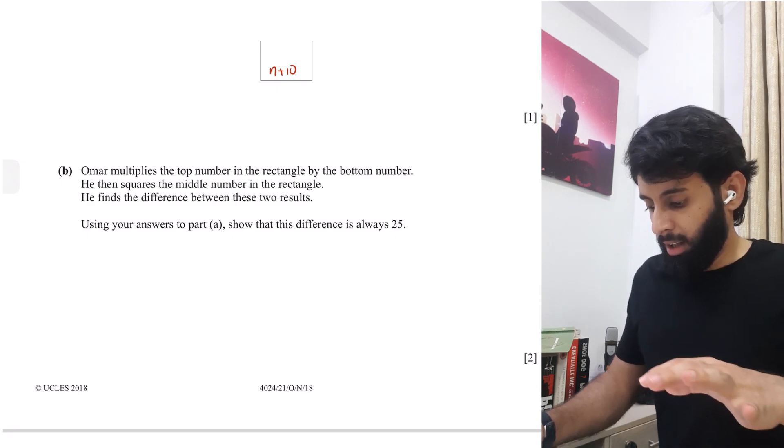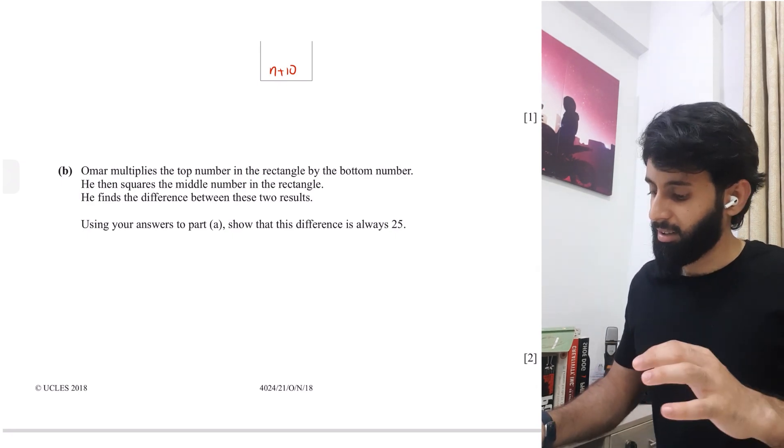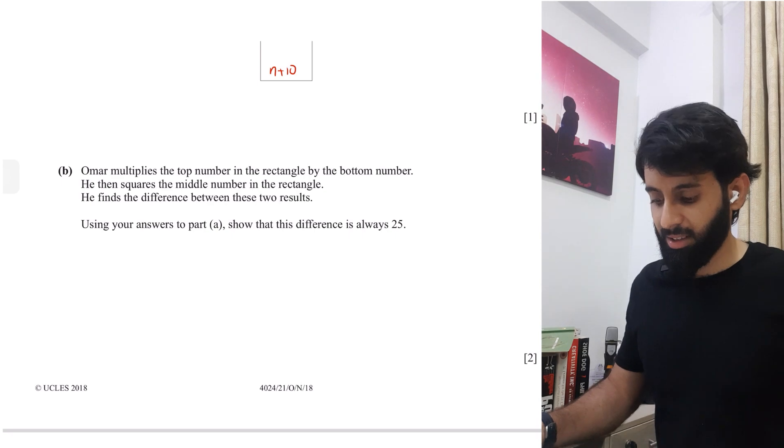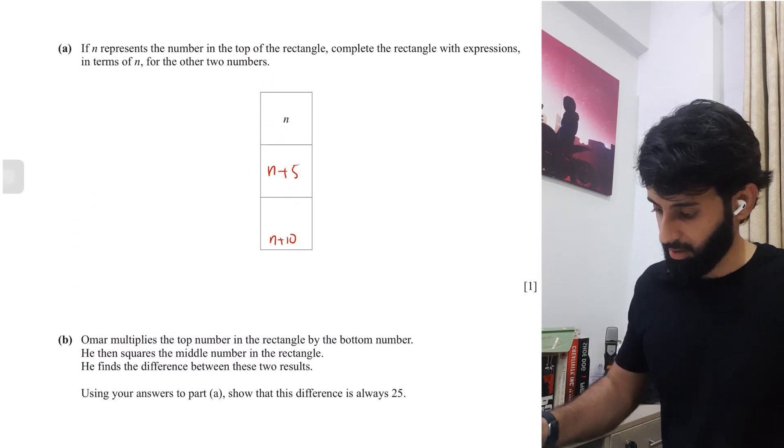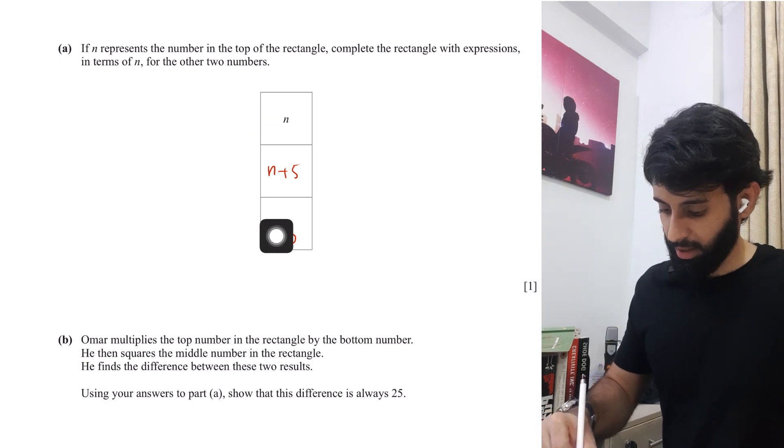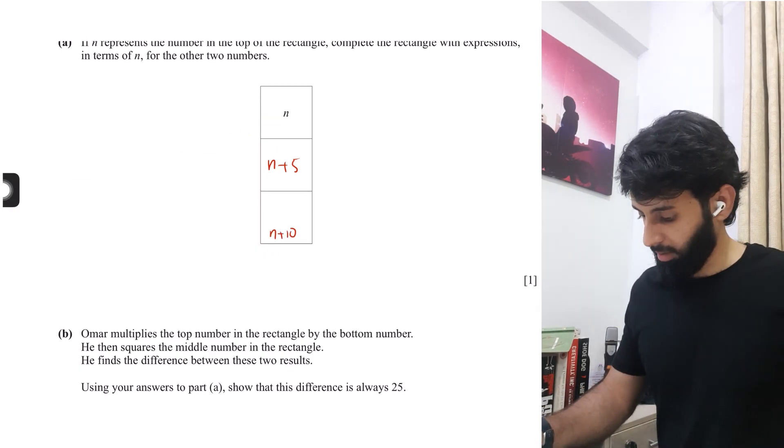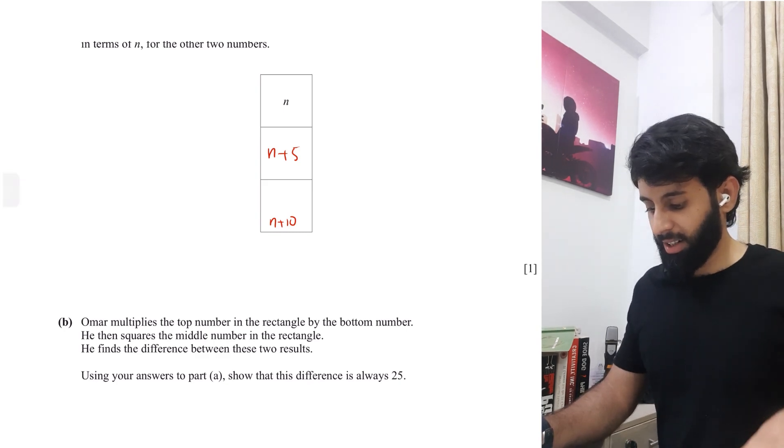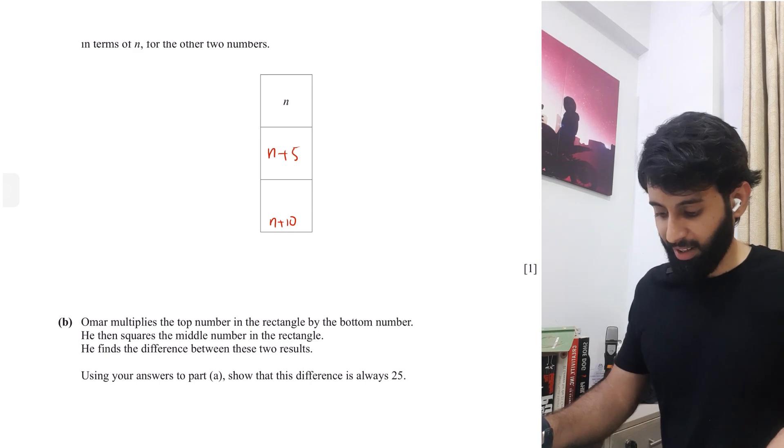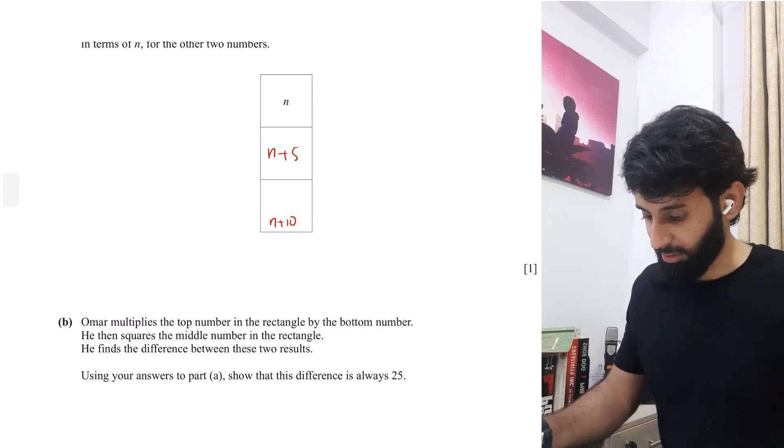Okay now again, Umar multiplies the top number in the rectangle by the bottom number. He then squares the middle number in the rectangle. He finds the difference between these two results. Using your answers to part a, show that this difference is always 25.